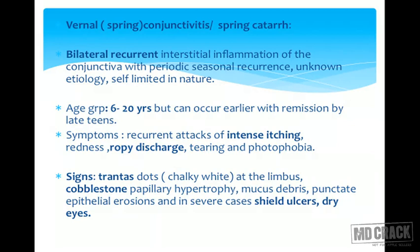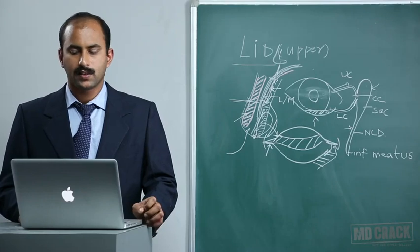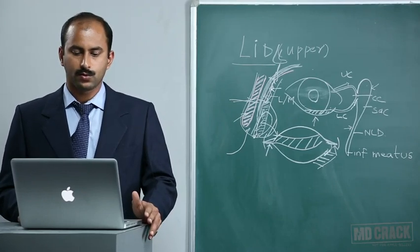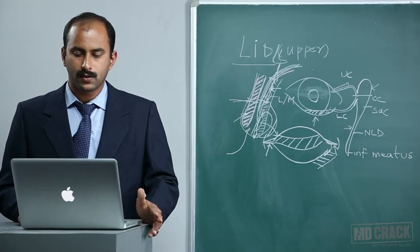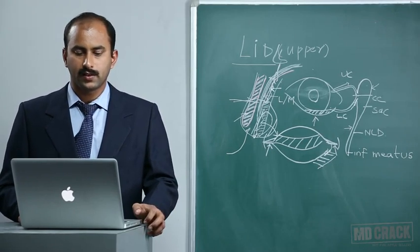Besides recurrent intense itching, symptoms include recurrent redness, ropy discharge, tearing, and photophobia. Important pathognomonic signs are Trantas dots — chalky white deposits at the limbus atop gelatinous aggregates — and cobblestone papillary hypertrophy of the conjunctiva, unique to this condition. Other signs include mucus debris, punctate epithelial erosions, and in severe cases shield ulcers and dry eye.